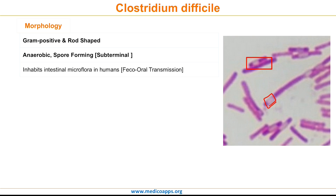It is a part of the intestinal microflora in humans, and hence it is spread by faeco-oral transmission. As we know Clostridium difficile is a part of intestinal microflora, there are certain risk factors which make the organism pathogenic to humans.